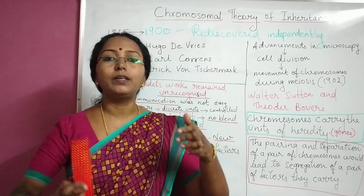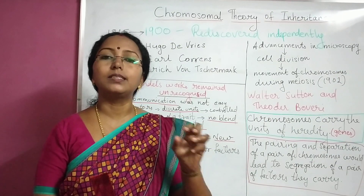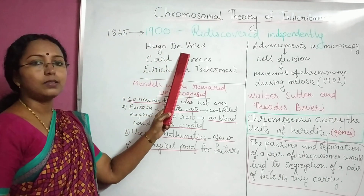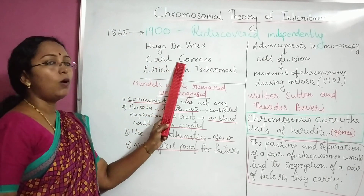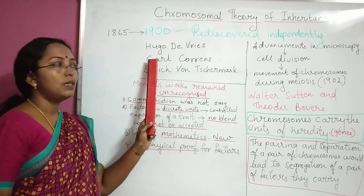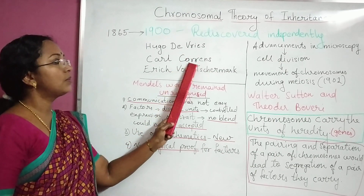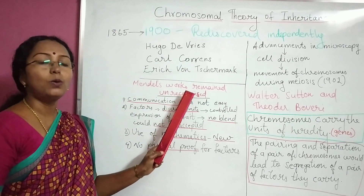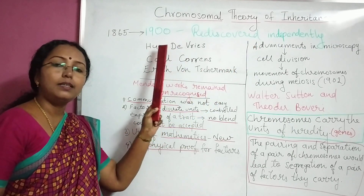The three different scientists were Hugo De Vries, Carl Correns, and Erich Von Tschermak — De Vries, Correns, and Von Tschermak. These were the three scientists who rediscovered Mendel's work independently in the year 1900.